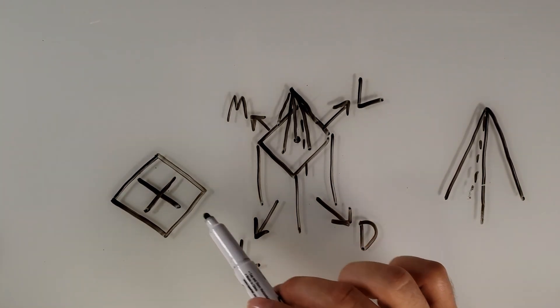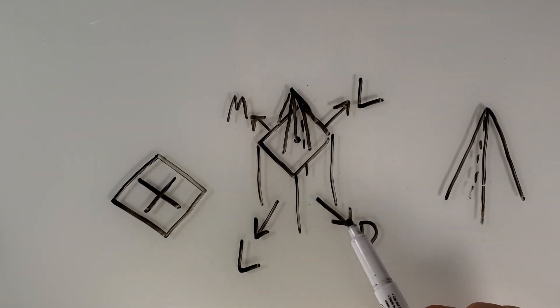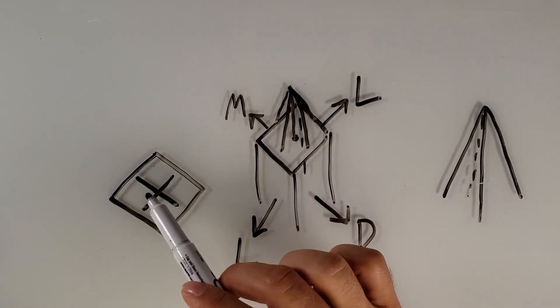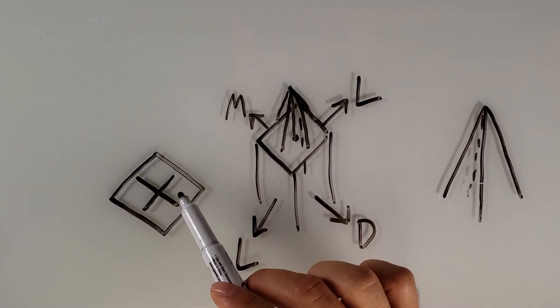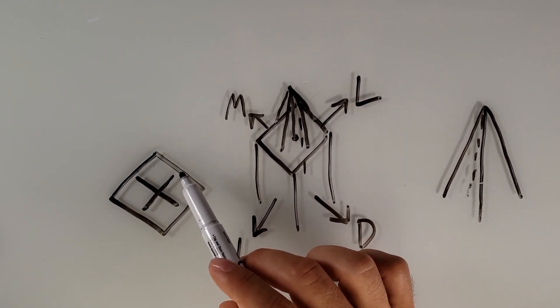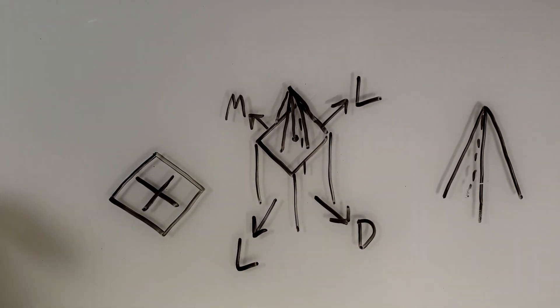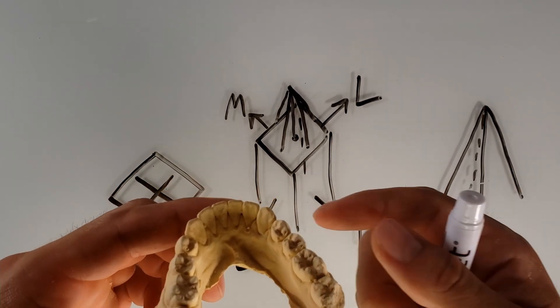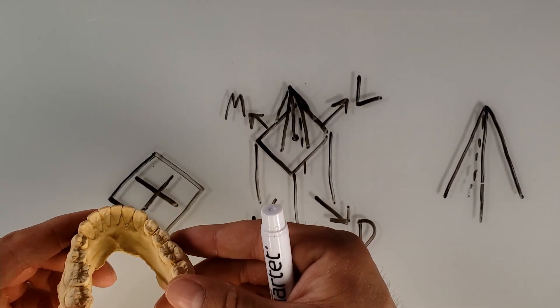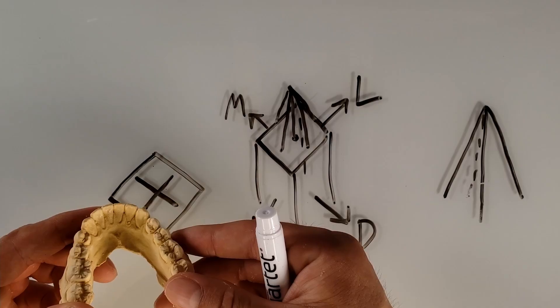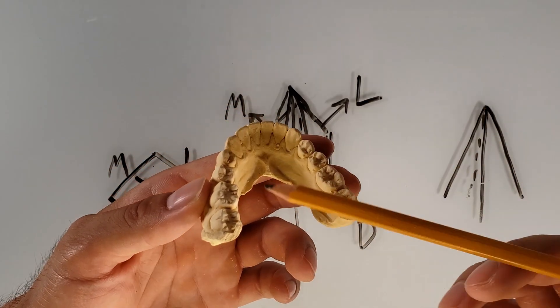Each of the ridges refers to the directional term that it's in the direction of. So this would be the distal, this would be the mesial, this would be the labial, this would be the lingual. So again, if we look at this tooth, it has four ridges corresponding to this. So whenever you have a cusp, you have four ridges.